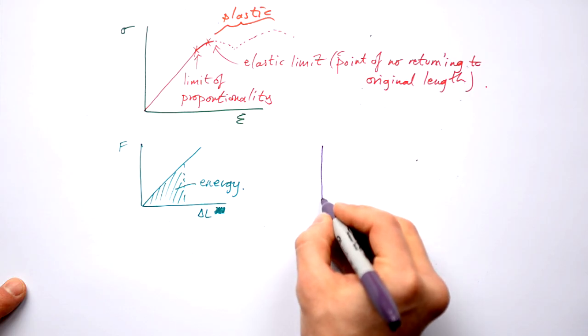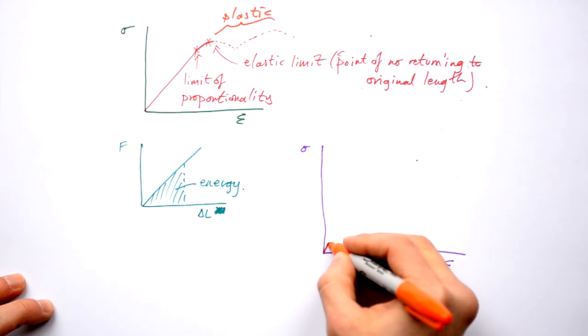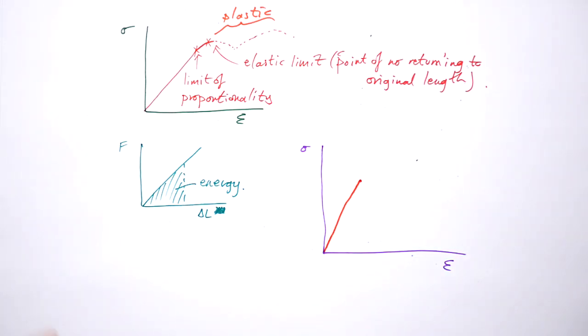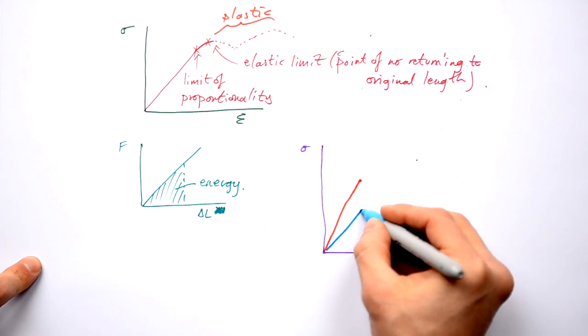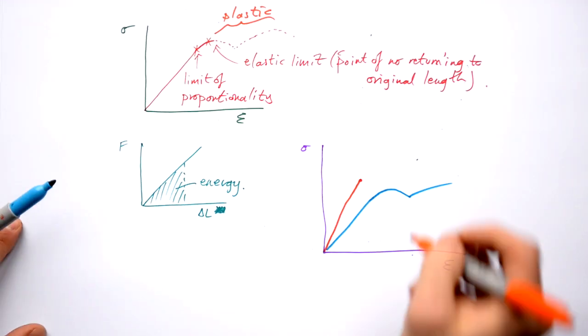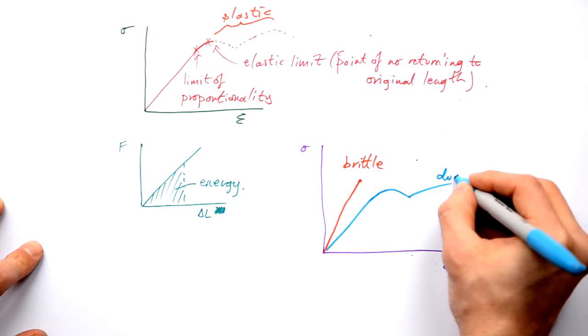Now then, let's say that we have a stress-strain graph for a couple of materials. This material here goes up and then breaks there. This material goes up like that, plastically deforms like so. This is what we would call a very brittle material. This is what we call a ductile material.